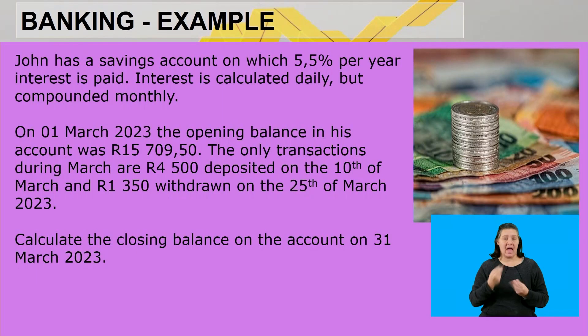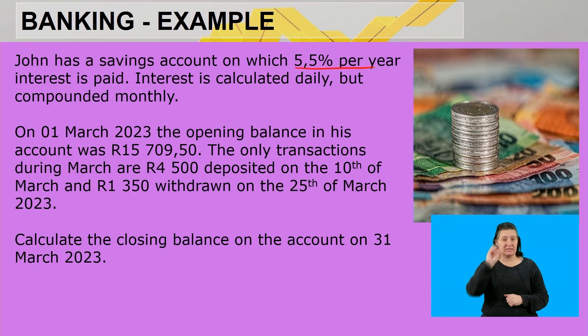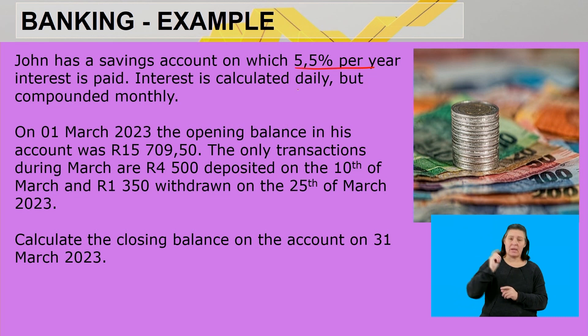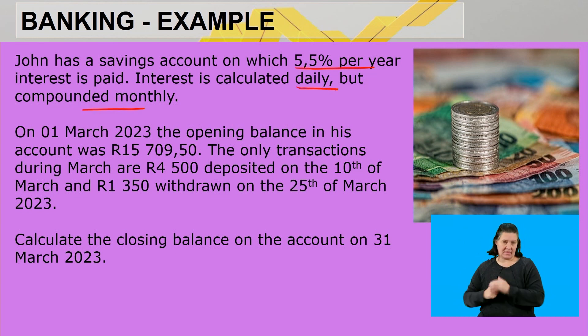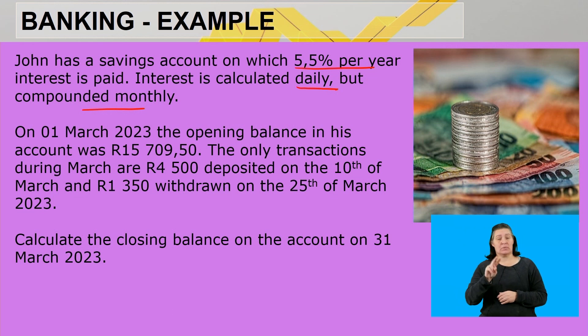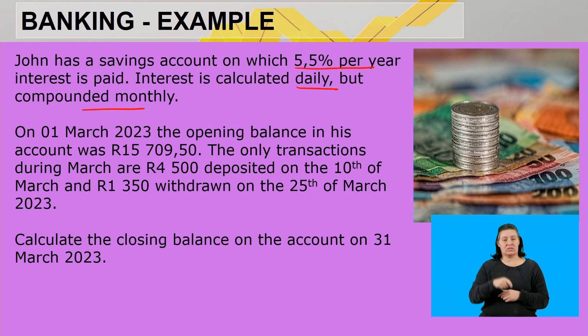Okay guys, welcome back after that short advert break. Let us continue with our second example. John has a savings account on which 5.5 percent per year interest is paid. Interest is calculated daily but compounded monthly. On the 1st of March 2023, the opening balance in his account was fifteen thousand seven hundred and nine rand and fifty cents.